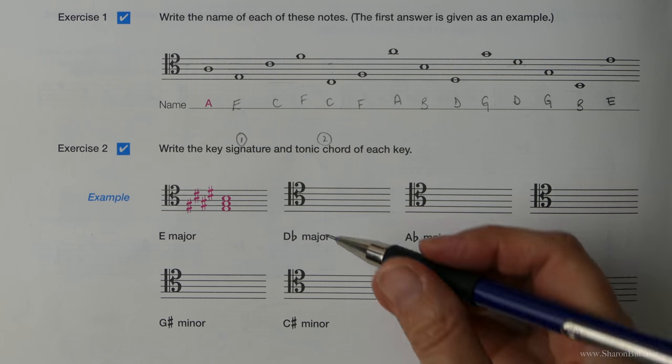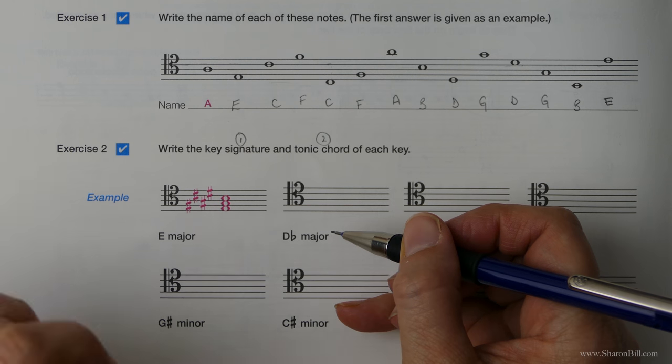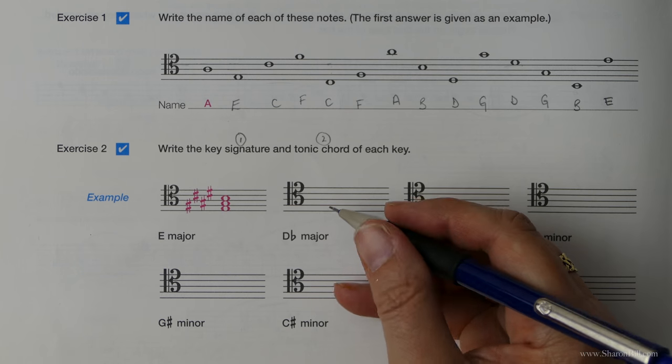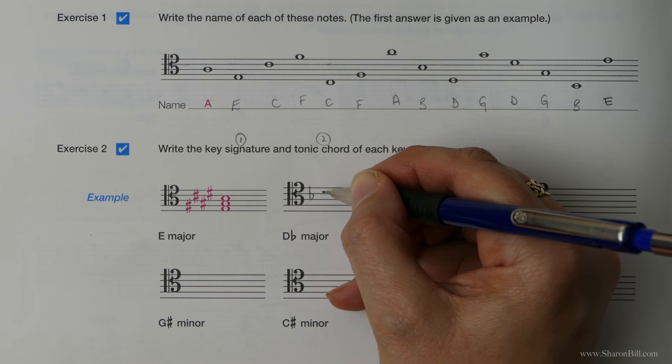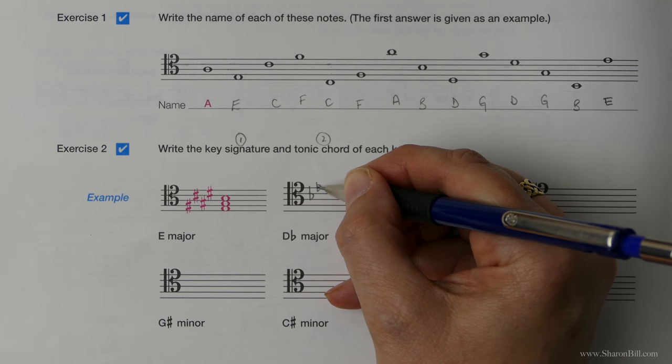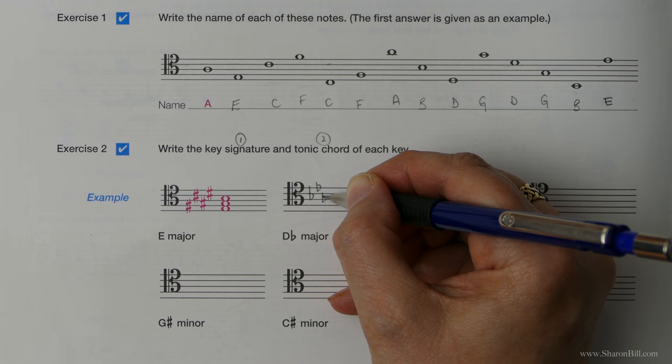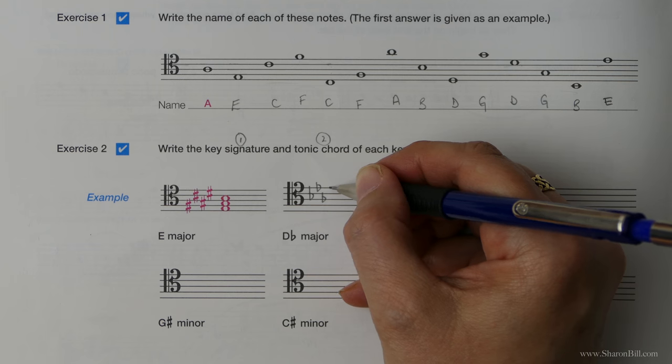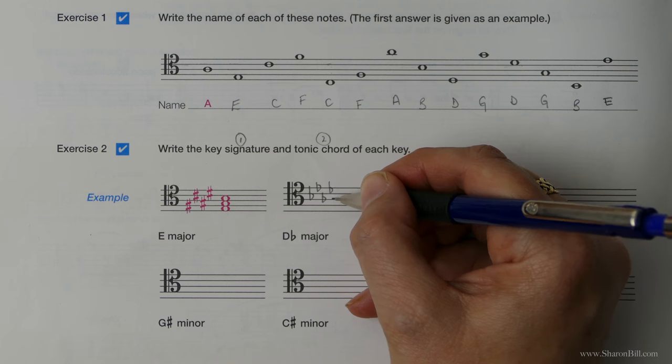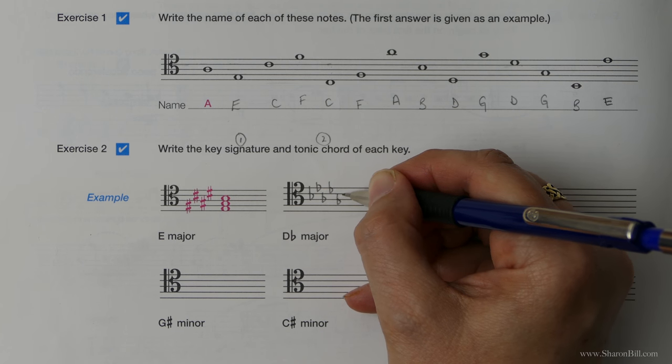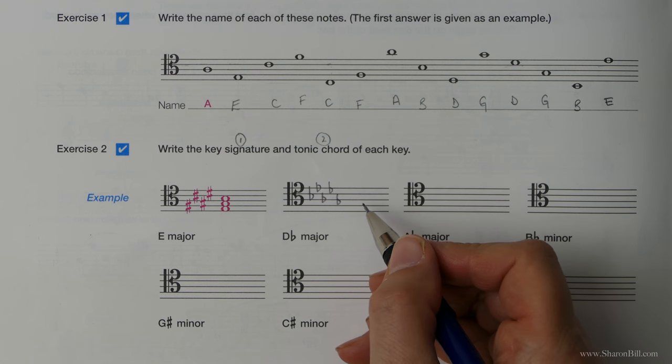So then, D flat major has a key signature of five flats: B, E, A, D, G. And so we've now got to position those. So C, B is here now, below that. E, top line. A is the middle line: C, B, A. And the D is the top space now, above the middle C. And the G is going to be this second space up: C, B, A, G. There we go.